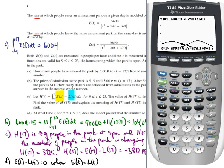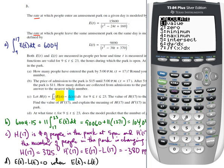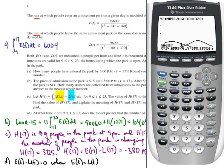I'm going to do second, calc, 5 for intersect, first curve, second curve, and that gives me at time 15.794. And that's going to be the time at which the number of people in the park is at a maximum.